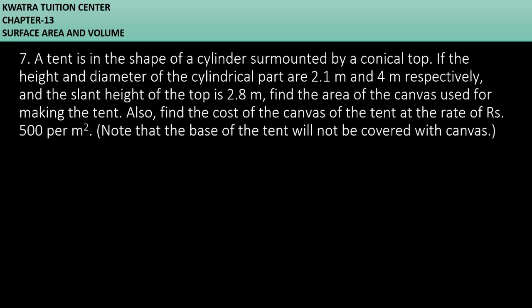Let's start with question number 7. It says a tent is in the shape of a cylinder surmounted by a conical top. So you have a cylinder and it is surmounted by a conical top. Conical top will be made on this cube. So it has become a tent shape.